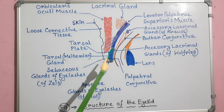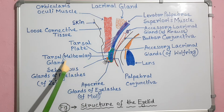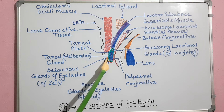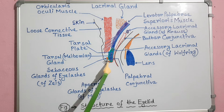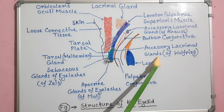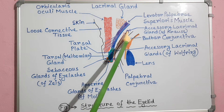At the free edges of the eyelids, there are two or three rows of hairs known as eyelashes. The eyelashes are short, stiff, and curved hairs. The eyelids contain a few major types of glands: the tarsal glands or Meibomian glands, sebaceous glands of the eyelashes or glands of Zeis, apocrine glands of the eyelashes or glands of Moll, and accessory lacrimal glands like glands of Wolfring, glands of Krause, etc.